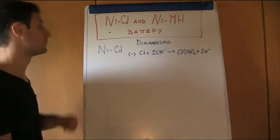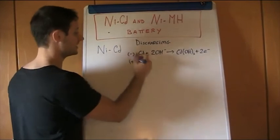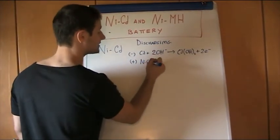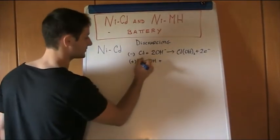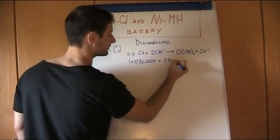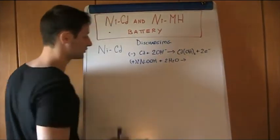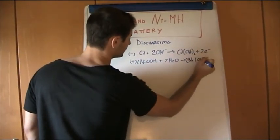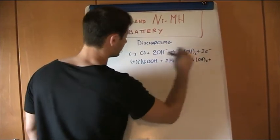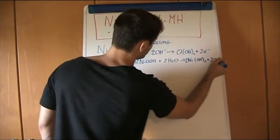Then we have the positive cathode terminal in which nickel oxide hydroxide can react, two times of this, with water in order to form the corresponding hydroxide and 2OH-.